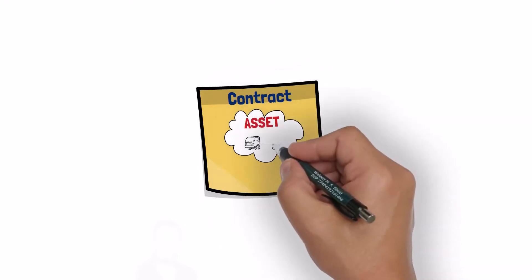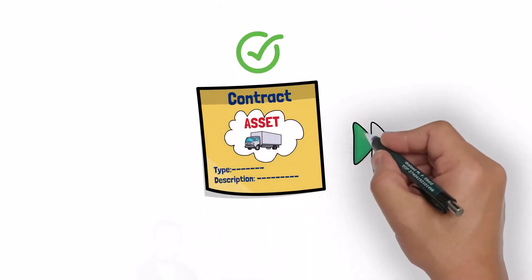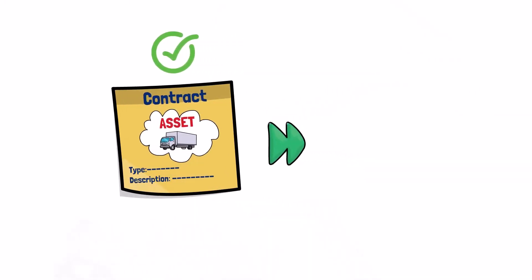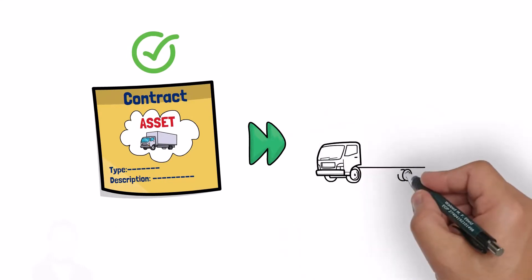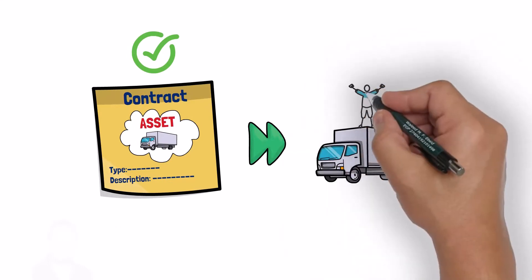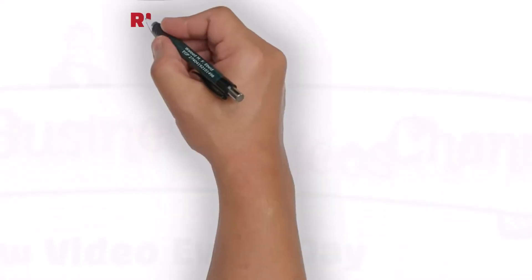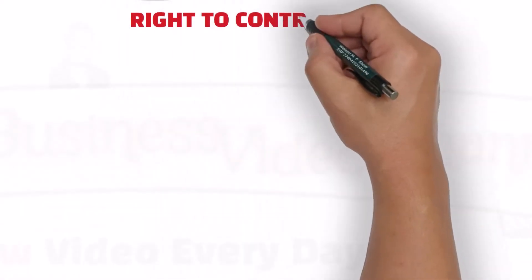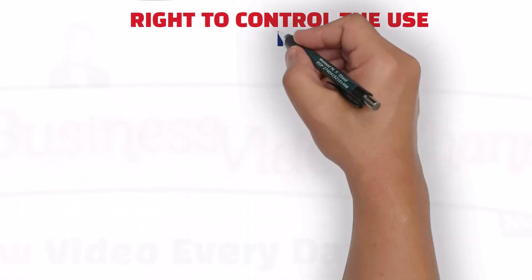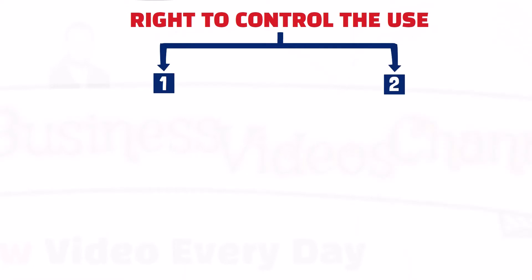Now that we have identified an asset in the contract, the next step is to assess whether the customer has the right to control the use of that asset throughout the period of use. The customer has the right to control the use of the identified asset if two conditions are met simultaneously.